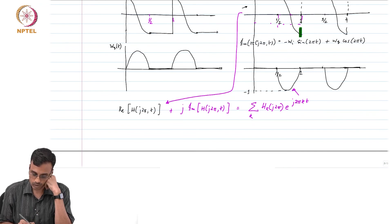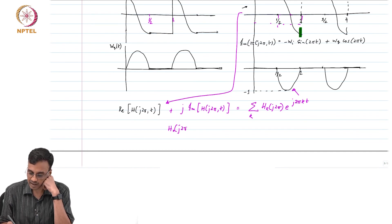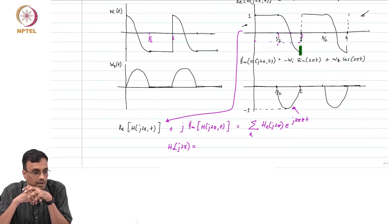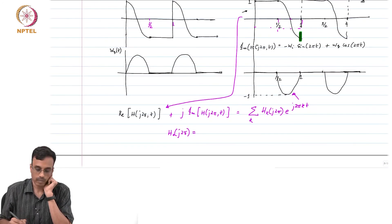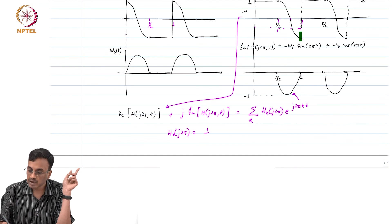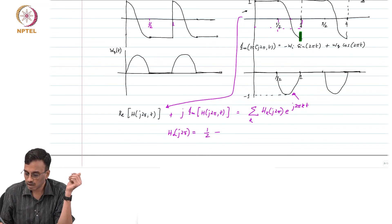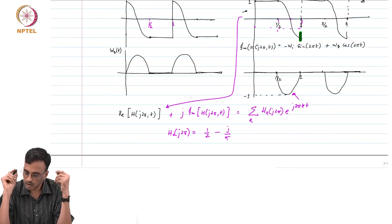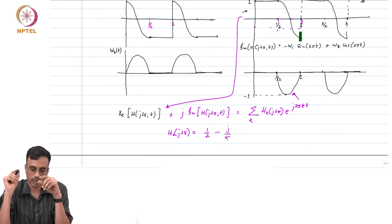Yeah, I am sorry, I think I have goofed. Basically, H₀ of j2π is nothing but the DC value of these waveforms, correct? And what should H₀ be therefore? Yeah, DC value of the real part is half, and DC value of the imaginary part is minus j by π. Does that make sense? Alright.